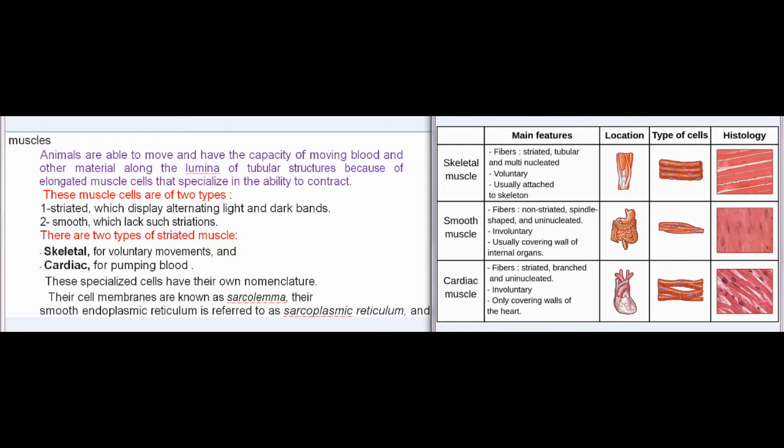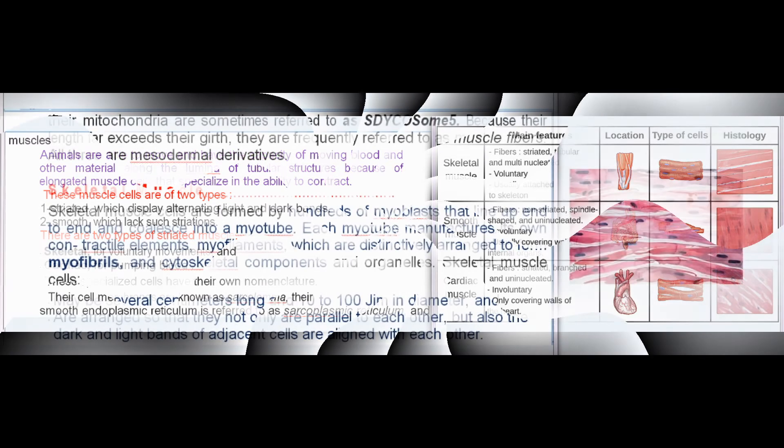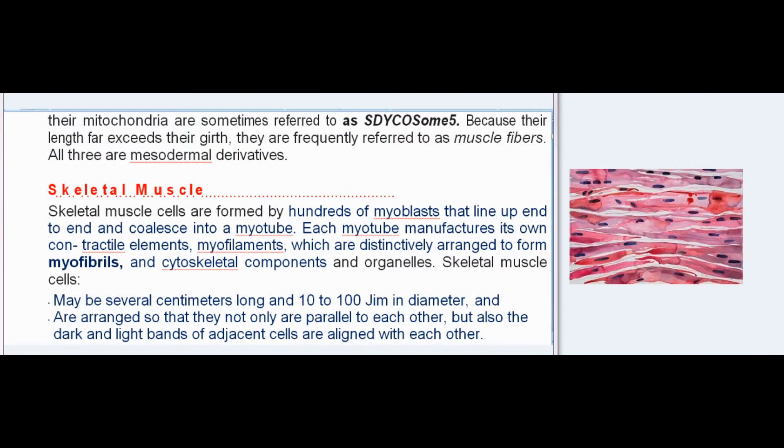There are two types of striated muscle: skeletal, for voluntary movements, and cardiac, for pumping blood. These specialized cells have their own nomenclature. Their cell membranes are known as sarcolemma, their smooth endoplasmic reticulum is referred to as sarcoplasmic reticulum, and their mitochondria are sometimes referred to as sarcosomes. Because their length far exceeds their girth, they are frequently referred to as muscle fibers. All three are mesodermal derivatives.